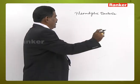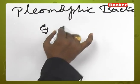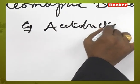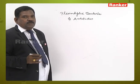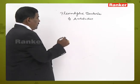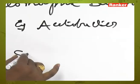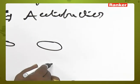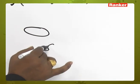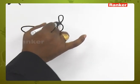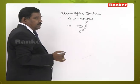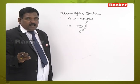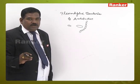An example of pleomorphic bacteria is Acetobacter. They may be small rod-shaped, ellipsoidal-shaped, or form a chain of rod-shaped bacteria. They show various shapes based on the changes in environment and changes in available nutrients.